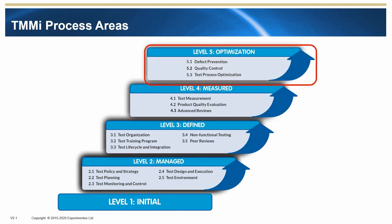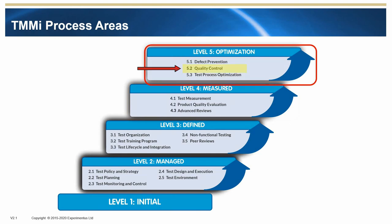Within Maturity Level 5 there are three more process areas: Defect Prevention, Quality Control, and Test Process Optimisation. Defect Prevention's purpose is to identify the root causes of defects and implement mitigating measures to prevent their reoccurrence. The purpose of the Quality Control process area is to implement statistical methods to manage and control the test process. The Test Process Optimisation process area looks to continuously improve test processes, identify and implement appropriate testing technologies, and to identify and make available high-quality test assets for reuse.